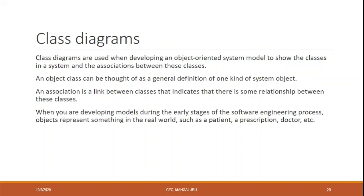Class diagrams are used when developing an object-oriented system model to show the classes in a system and the associations between these classes. A class diagram consists of three fields in a rectangle box: the first field is the class name, the second field is the attribute field, and the third field is operations, which is optional — you can write functions related to the attributes declared in the second box.